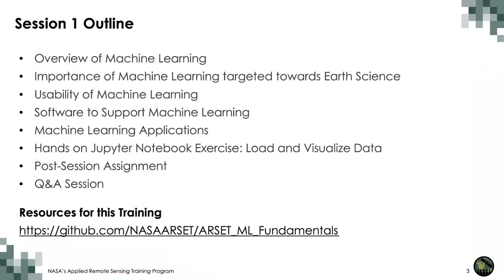The outline for today's session: we're going to first look at an overview of machine learning, some fundamentals and basic concepts. We'll then look at the importance of machine learning targeted towards Earth science and applications that support it. We'll see how applicable machine learning algorithms are for remote sensing data, discuss supporting software, look at applications in detail, and have a hands-on experiment using Google Colab to load and visualize data. For all three sessions, we have a GitHub repository with resources and materials available after the session.